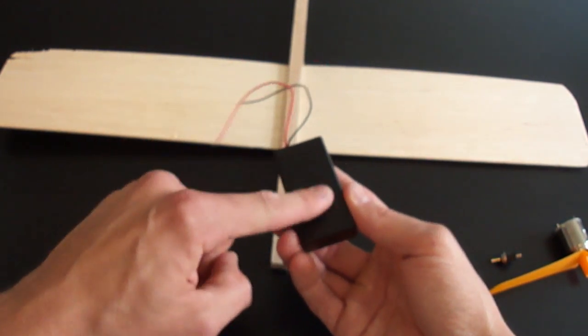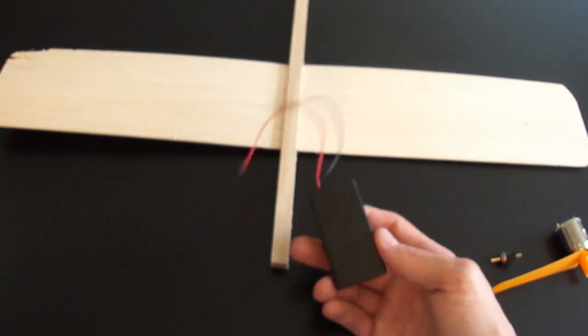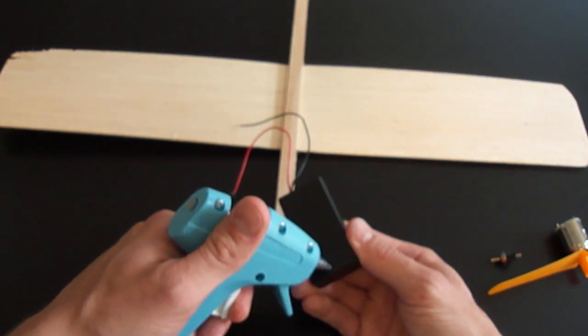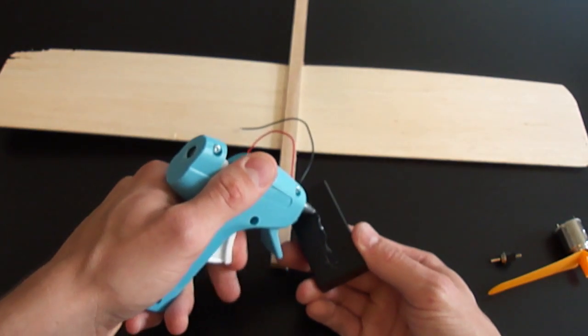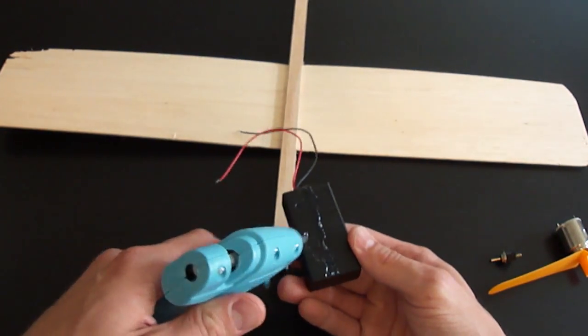So I'm just going to put a little bit of hot glue on the back here. Actually, I'm going to put a lot, because I want to make sure this stays on there, especially after you're flying the plane and it crashes. So I'm just going to add a little bead here just so I can get it on there at the center of the battery pack. And let's put that on.